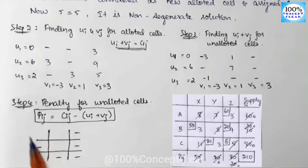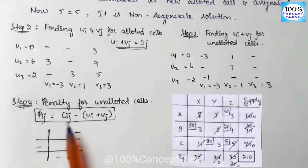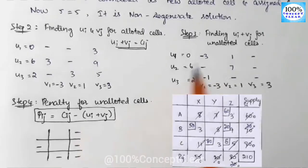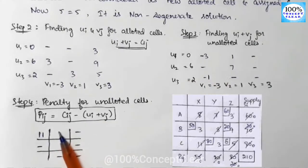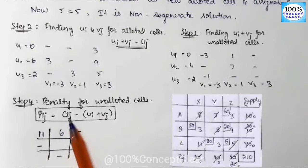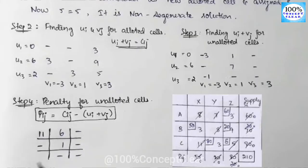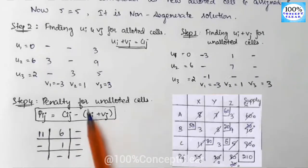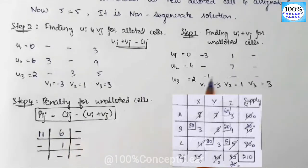Now we compute the penalty values Pij equals Cij minus (Ui plus Vj). First unallocated cell: cost 8 minus (minus 3) equals 8 plus 3 equals 11. Second cell: cost 7 minus 1 equals 6. Third cell: cost 8 minus 7 equals 1. Fourth cell: cost 11 minus (minus 1) equals 11 plus 1 equals 12.